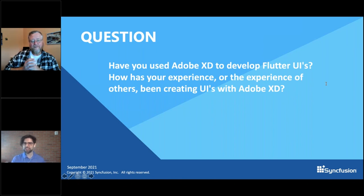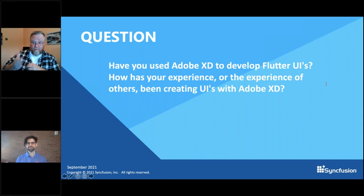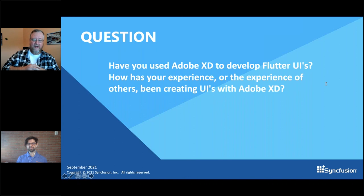Will Flutter be able to access the Windows 11 API? The short answer is yes. For every platform we target, you can always drop down and write native code. Right now the Windows embedder is C++, and any code you want to write in C++ enables access not only to all the Win32 APIs but also to the .NET-based APIs through the magic of compiler switches.